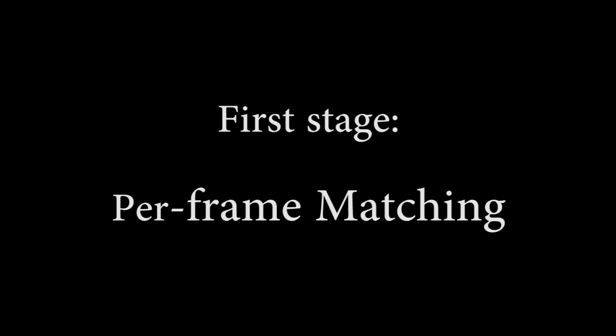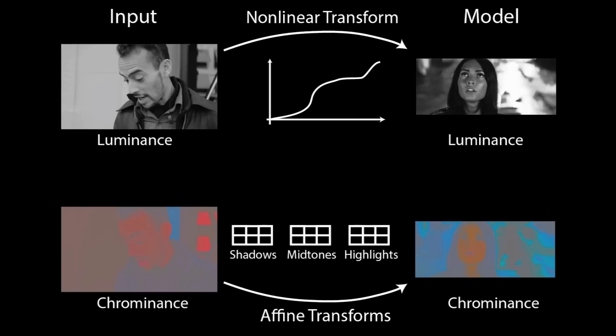Given a pair of input and model frames, our first step computes a color transformation that brings the input image to its desired appearance. We decouple our processing of the luminance and chrominance of the image. We transfer the luminance with a regularized 1D histogram matching technique and chrominance using a set of affine transformations computed for shadows, midtones, and highlights. Please see the paper for further details.